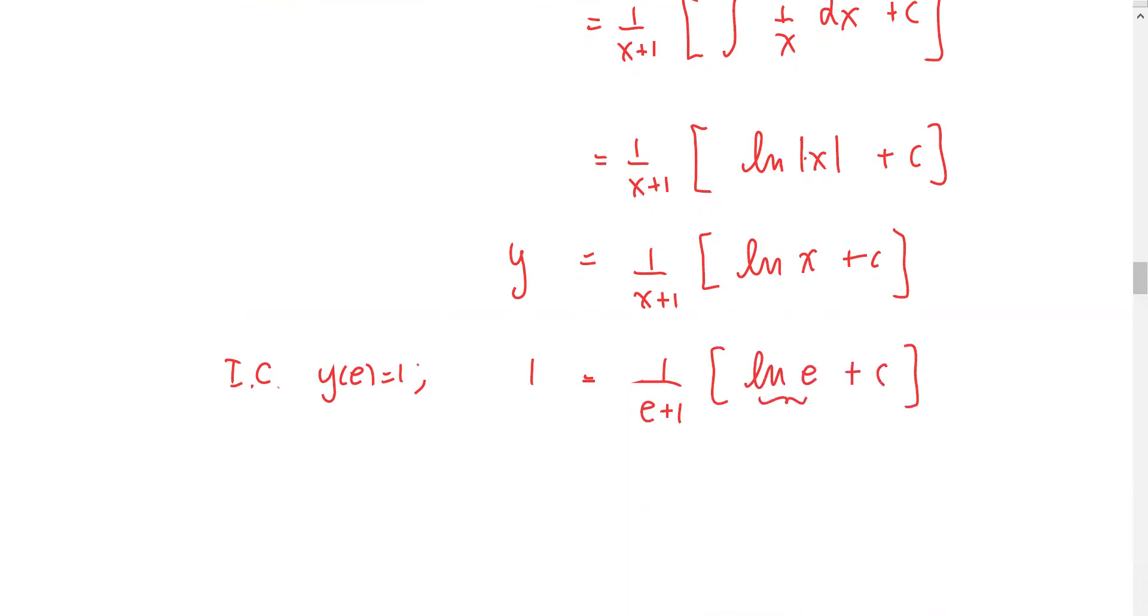The natural log of e is 1. So we multiply both sides by e+1. So e+1 equals 1+c, or c equals e.